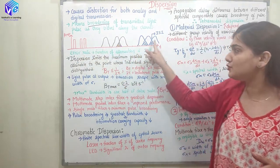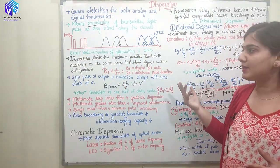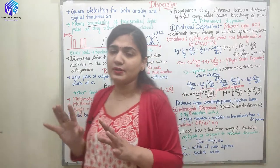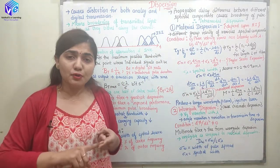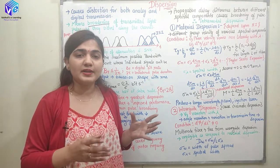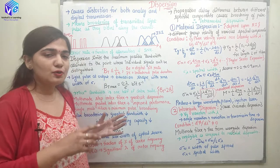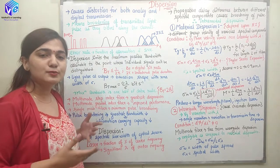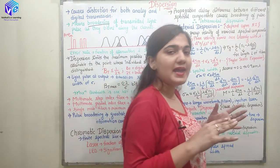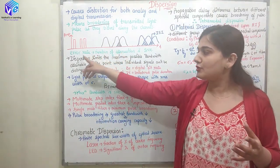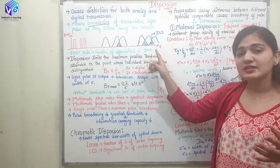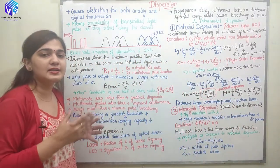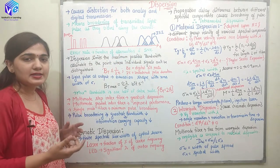Now how are we going to calculate the error rate? Error rate is a very important phenomenon. If I know the error rate, I can operate my optical fiber at a particular bandwidth. Error rate is a function of attenuation as well as the signal-to-noise ratio. If I increase the attenuation, I am going to increase the error rate. If I decrease the signal-to-noise ratio, I am going to increase the error rate.